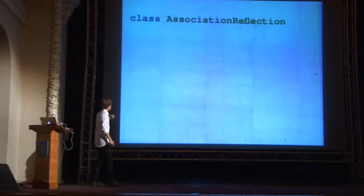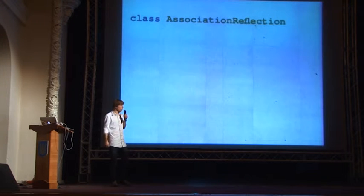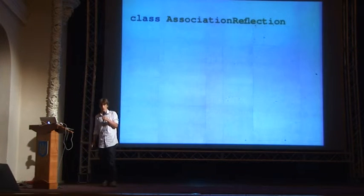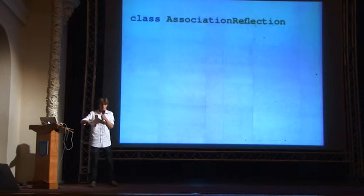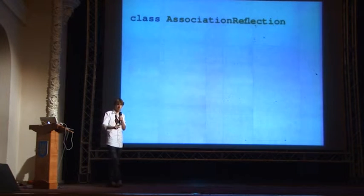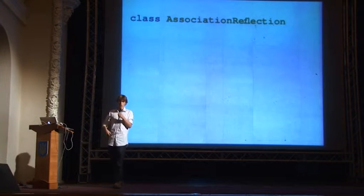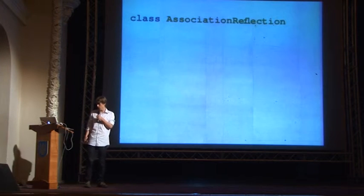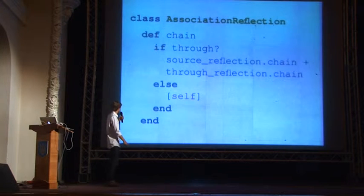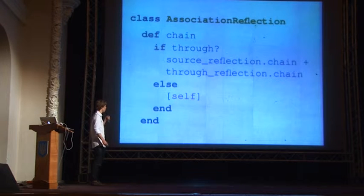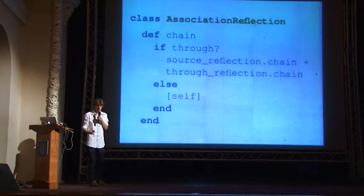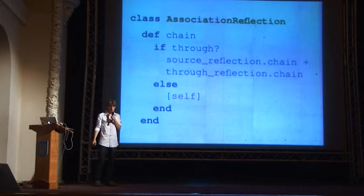Let's look at the code to actually do that. This is a class in ActiveRecord — AssociationReflection — which holds metadata about associations. If you have a comments association on a task model, on that task model there will be this reflection object that holds conditions, foreign key names, etc. This was a good place to put this method, which I decided to call Chain. It's quite simply the algorithm I showed before: if it's a through association, take the chain from the source reflection, add it to the chain from the through reflection. Eventually we get to something that's not a through association, and in that case we just return a one-item array of self.